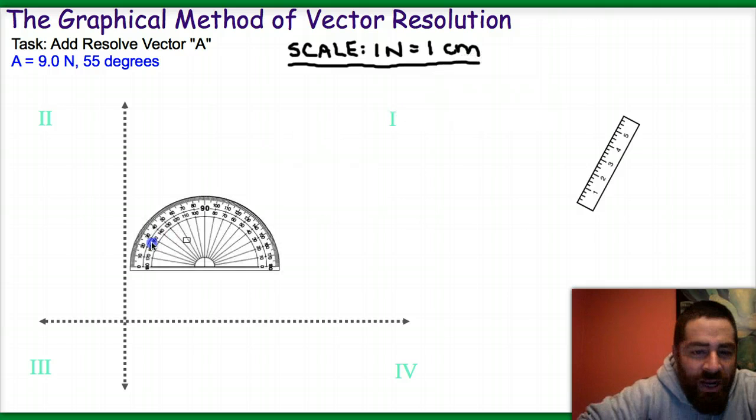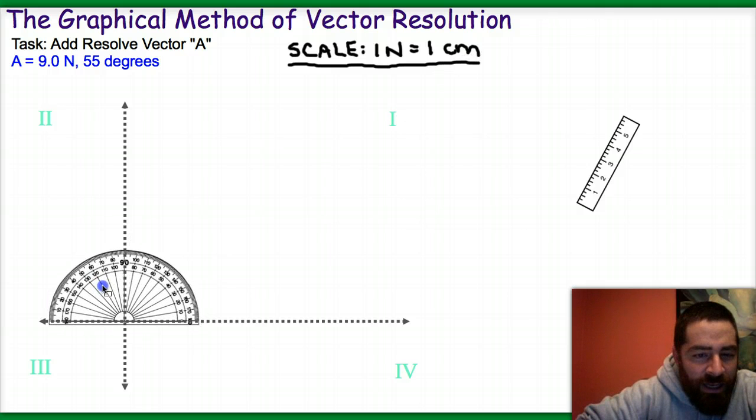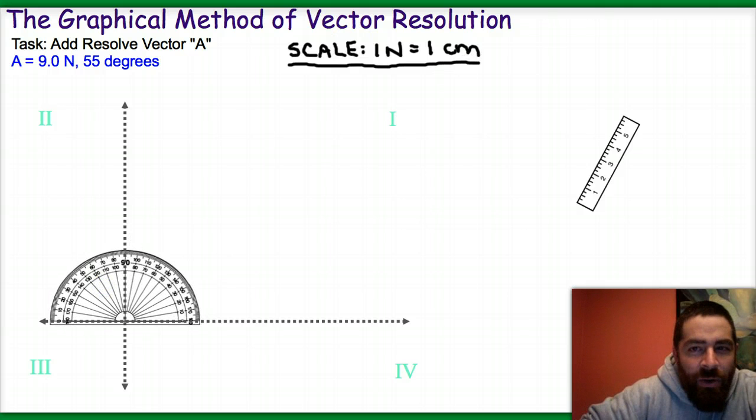I'm going to grab my trusty protractor, bring it over here, line it up on my axis. I'm going to make a quick mark at 55 degrees. Looks like it's going to be right about there.